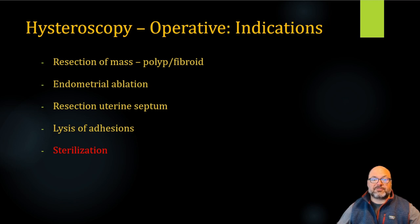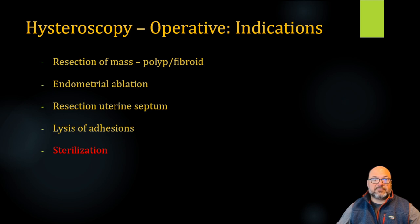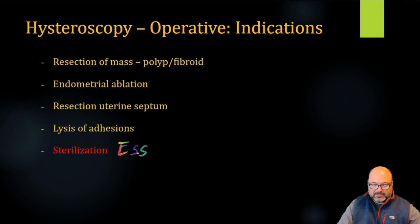As far as the indications specifically for operative hysteroscopy, most of the time we are both evaluating but then treating an intrauterine mass such as a polyp or fibroid. Endometrial ablation, which we'll talk about the different technologies that can be used for that. Resection of a uterine septum is something that is done via hysteroscopy. Lysis of adhesion, specifically Asherman syndrome, which we'll talk about further as well. And in the past, hysteroscopy was used for sterilization with the placement of transtubal occlusion like the Essure system, but that has obviously not been used recently.